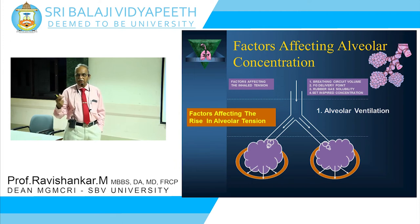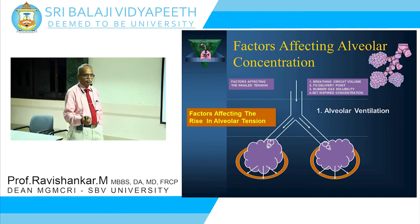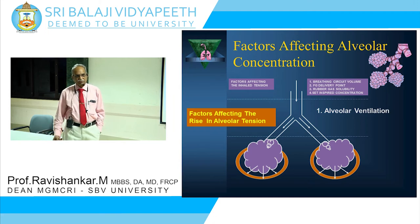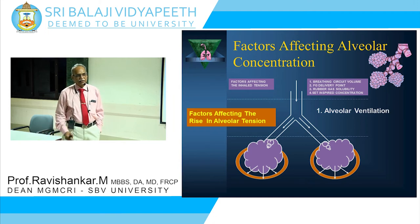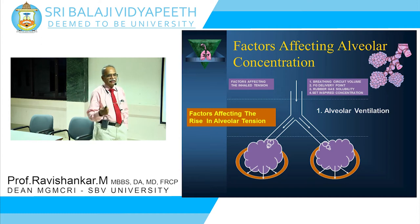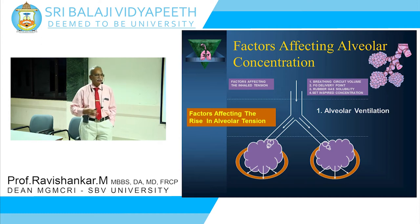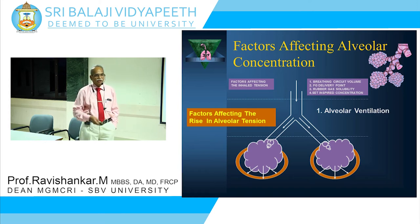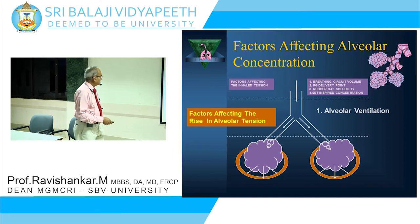If you had given fentanyl and propofol and the patient stops breathing, then no anaesthetic will reach the alveoli and into the blood. Till you ventilate and push it inside, and till the tension rises in the alveoli, the patient will not be anaesthetized by the inhalational agents.